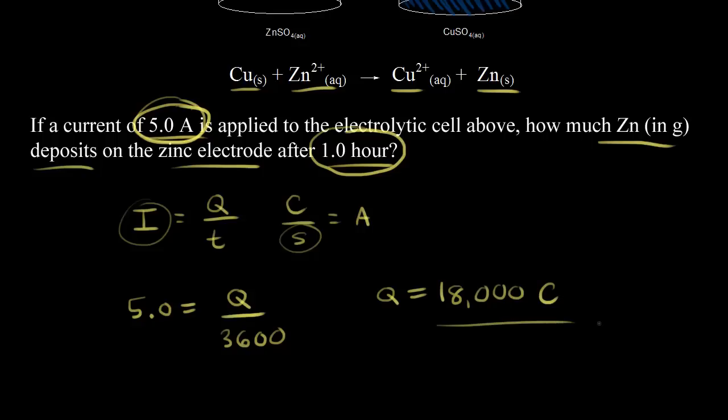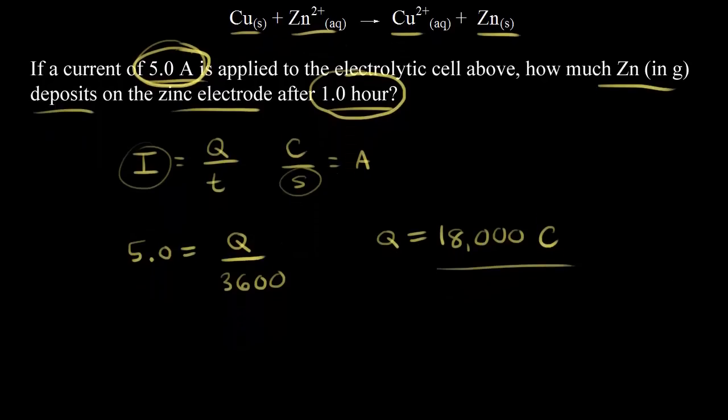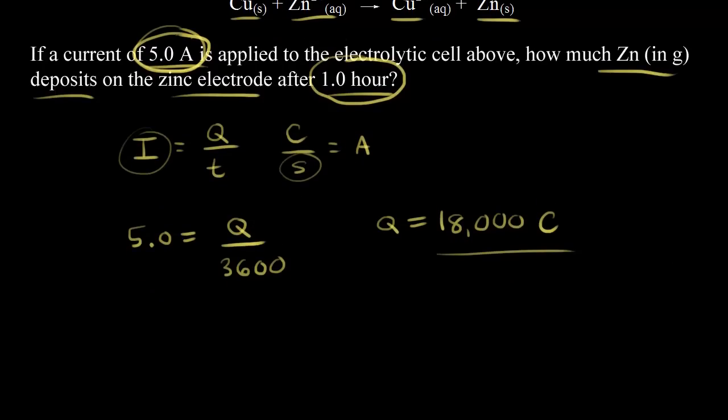From the charge, we can figure out how many moles of electrons we're dealing with because of Faraday's constant. Remember, Faraday's constant tells us that one mole of electrons has a charge of 96,500 Coulombs.